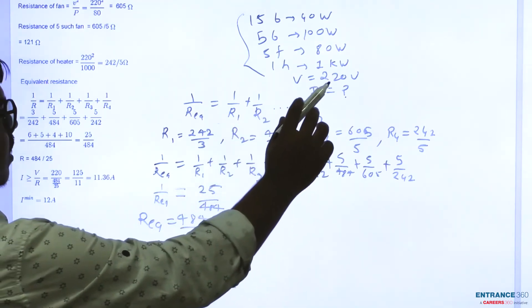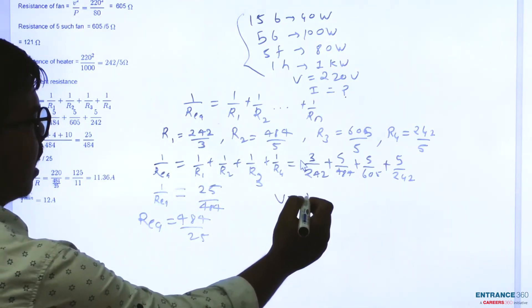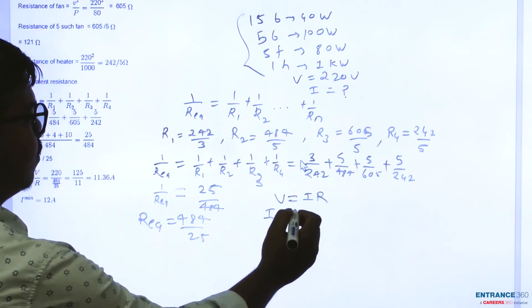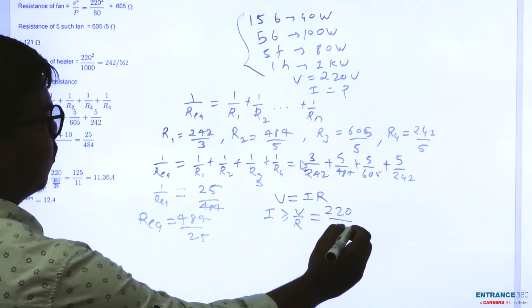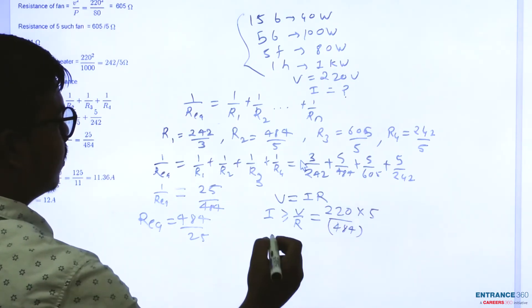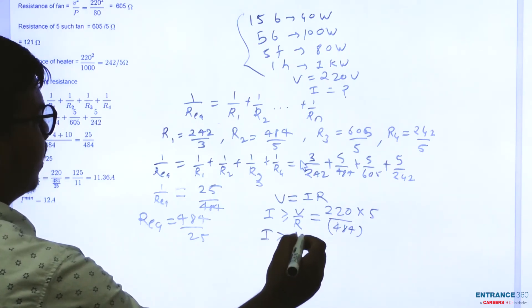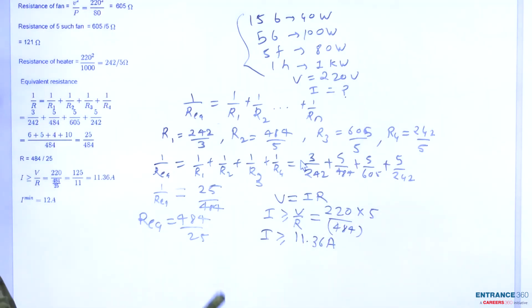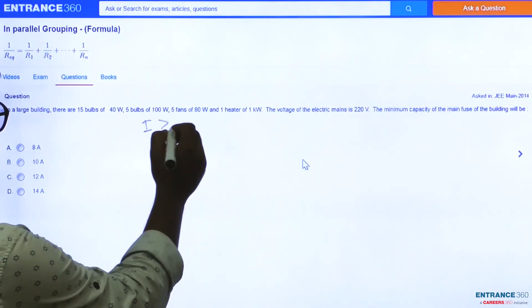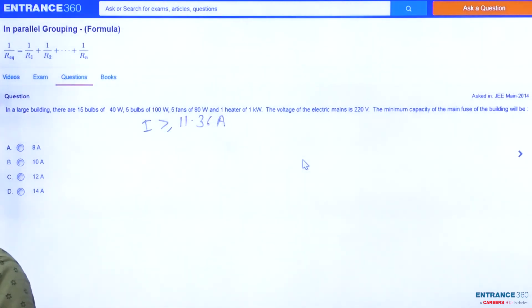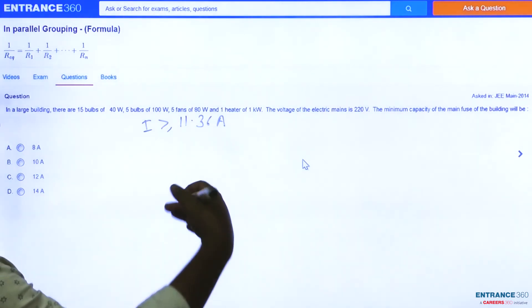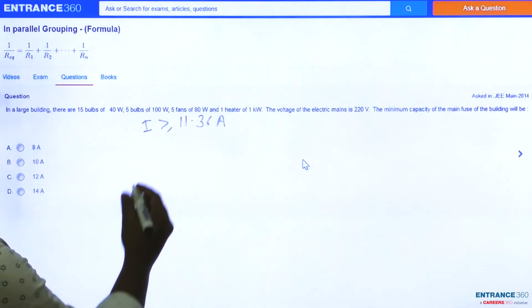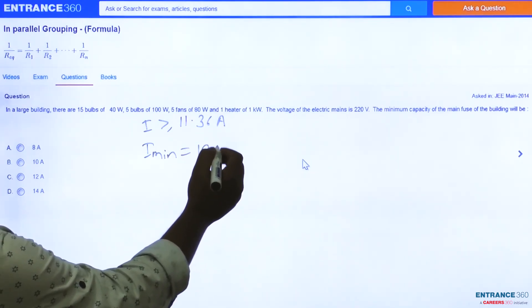With a voltage source of 220 volt and using V = IR, the minimum current I ≥ V/R_eq = 220/(484/25). This gives I ≥ 11.36 ampere. Looking at the options, 8A and 10A are both less than 11.36A, so the minimum fuse capacity from the available options is 12 ampere.